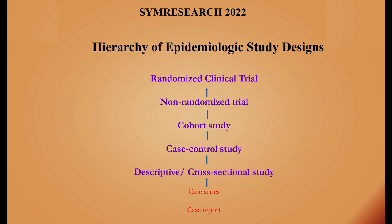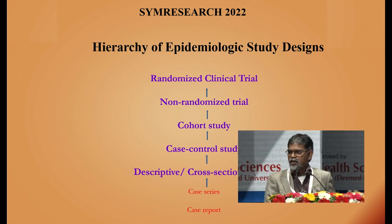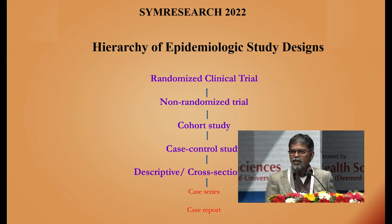Traditionally, these are the set of tools or epidemiological study designs that we work with. It's called a hierarchy because the ones higher up are supposed to lead us closer to the truth. The three blue at the bottom — the descriptive or cross-sectional studies, the case-control study, and the cohort study — are together called the observational study designs. The other two on top are the interventional or experimental study designs.